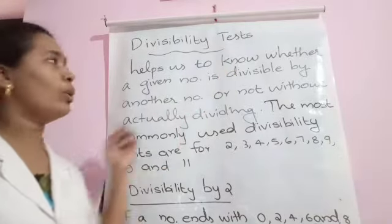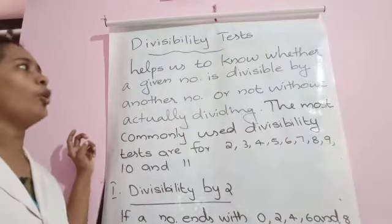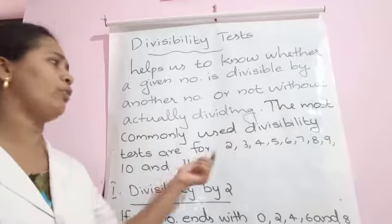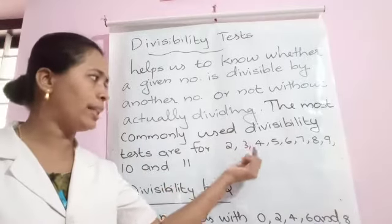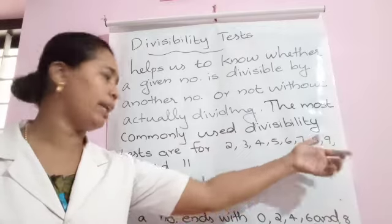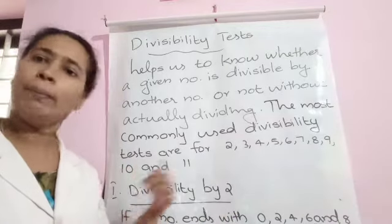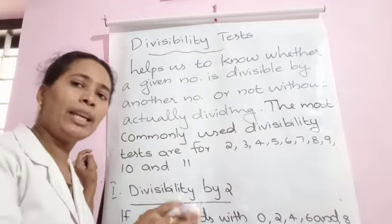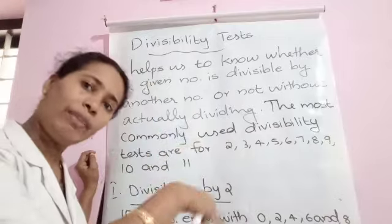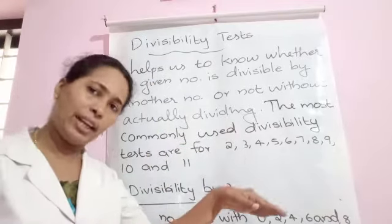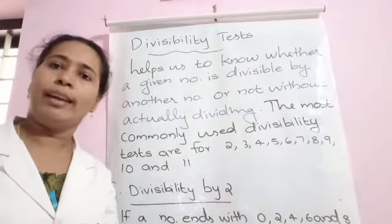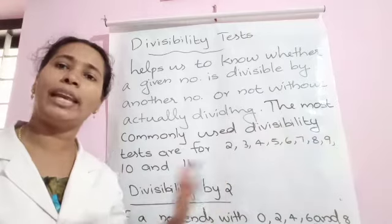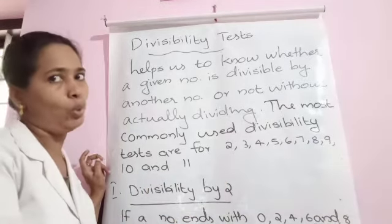Divisibility tests are commonly used for numbers. Divisibility rules or definitive tests are used for divisibility by 2, 3, 4, 5, 6, 7, 8, 9, 10, and 11. This test will help us determine whether a number is completely divisible or not. Without dividing the number, we can predict whether the given number is divisible by 2, 3, 10, 11, etc., using these rules.